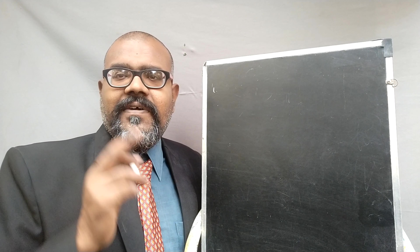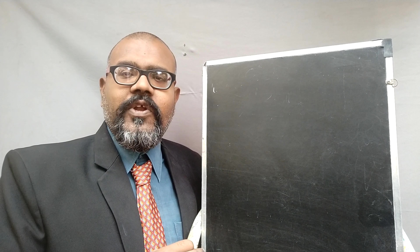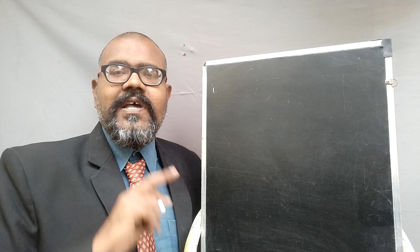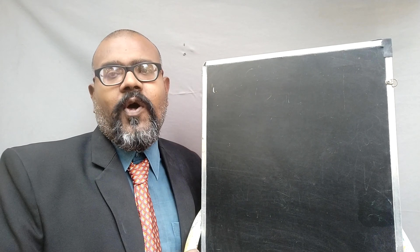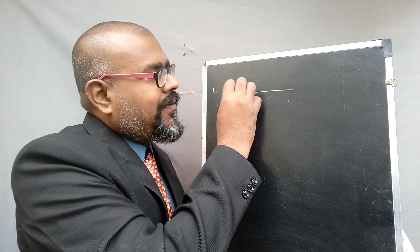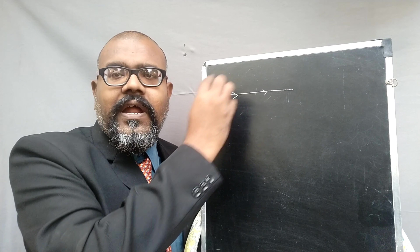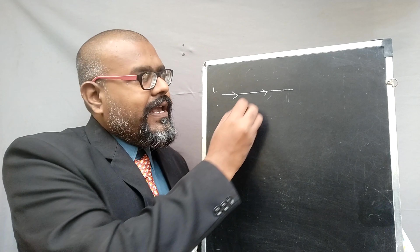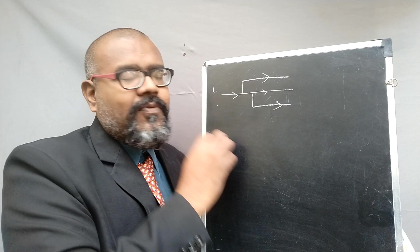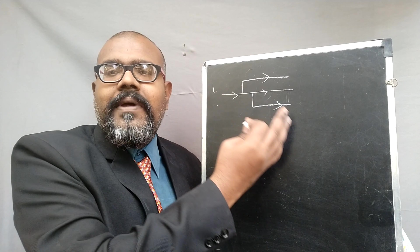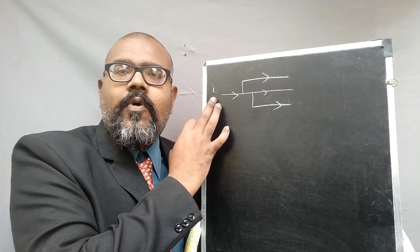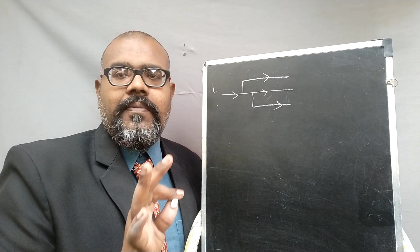Among the five important tips, the first tip is: once you have received the question, the first thing you need to identify is how many forward paths are there in the block diagram. A forward path starts from the input and ends towards the output. It should not go back to the input — it moves from input towards output. That is the forward path.